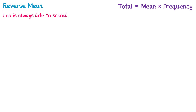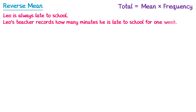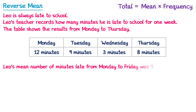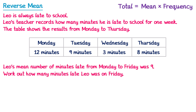So in this question we've got Leo who is always late to school. Leo's teacher records how many minutes late he is to school for one week. The table shows the results from Monday to Thursday — notice we don't have Friday. Leo's mean number of minutes late from Monday to Friday was 9, and we need to work out how many minutes late Leo was on Friday. If you're ever told the mean, it's probably a reverse mean question.